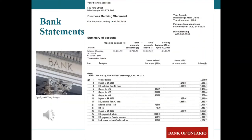Bank statements. Each month, the bank provides a bank statement showing the company's bank transactions and balance. With online banking, companies can access their bank statements whenever required. The bank statement shows: one, the date; two, a description of each transaction; three, amounts deducted or debited from the bank account — for example, checks, EFT payments, service fees, and other payments; four, amounts added or credited to the bank account — for example, deposits, EFT receipts, and other receipts; and five, the account balance after each transaction.